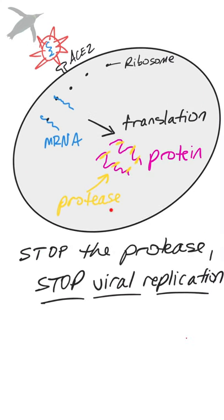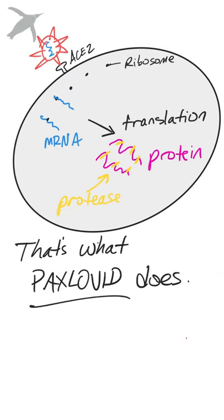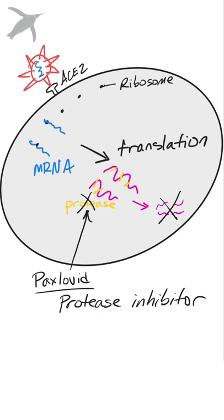So here it is. If you can stop this protease from cutting up the proteins, you can stop viral replication. And that's exactly what Paxlovid does. It is a protease inhibitor.